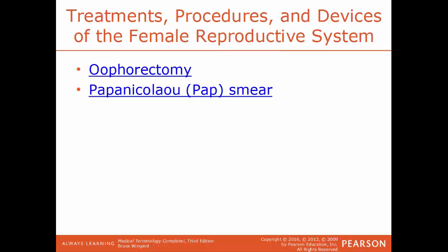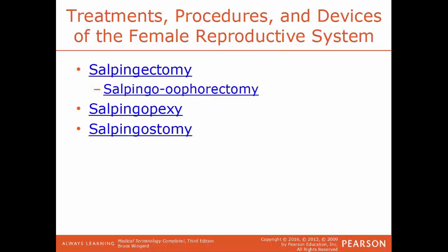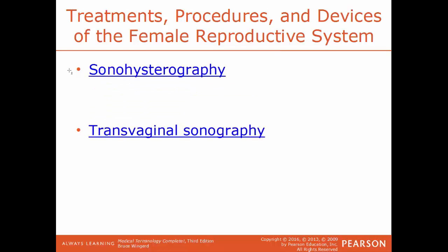A mammogram shows visible tumors where tissue collection is visible. An oophorectomy is the surgical removal of an ovary. A Papanicolaus smear, more commonly called a pap smear, is a diagnostic test to check for cervical cancers. Salpingectomy is the surgical removal of a fallopian tube. If both the fallopian tube and ovary are removed, that is a salpingo-oophorectomy. Salpingopexy is the surgical fixation of a fallopian tube.